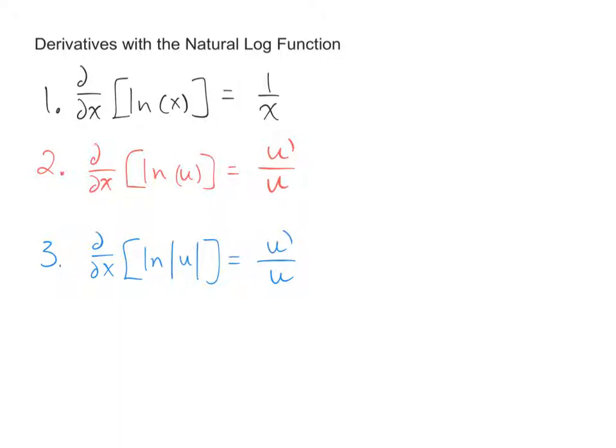And you've seen this one already: the derivative of the natural log of x is 1 over x. We've talked about this—if u is a function of x, a function in terms of x, then the derivative of the natural log of u is u prime over u.